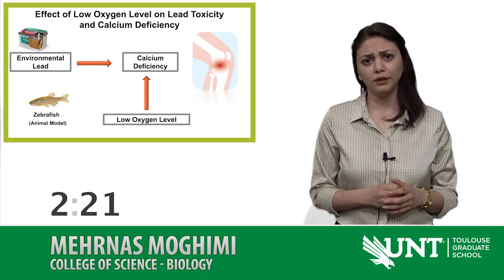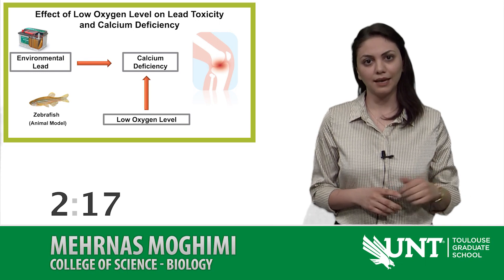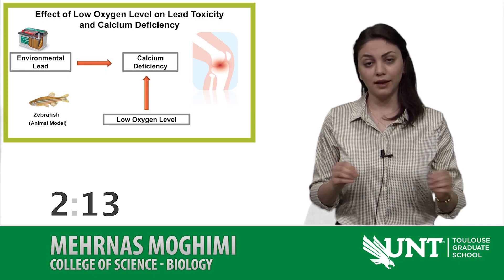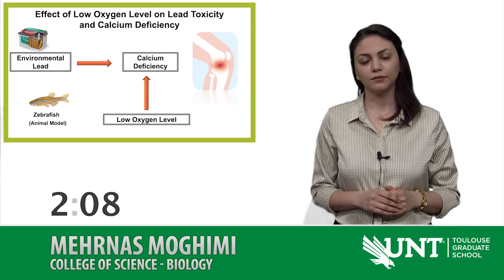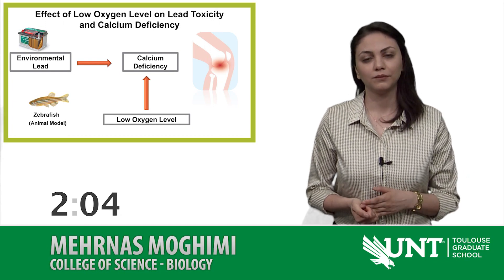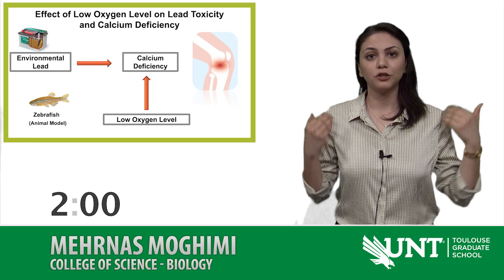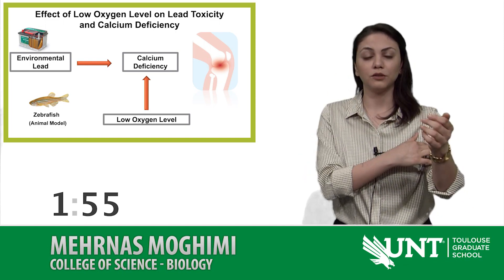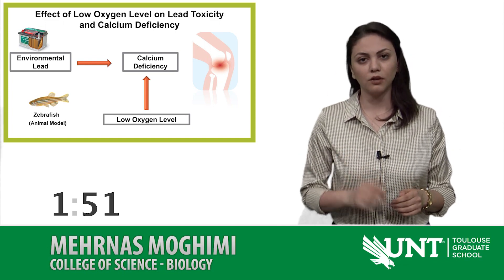Why is lead absorbed by the body when it is not essential? Lead mimics calcium and the body mistakenly absorbs lead, which results in the displacement of calcium. Calcium is an essential element for our body. It plays a vital role in the maintenance and formation of our skeleton and the regulation of both neural and muscular functions. Calcium is critical for our health.